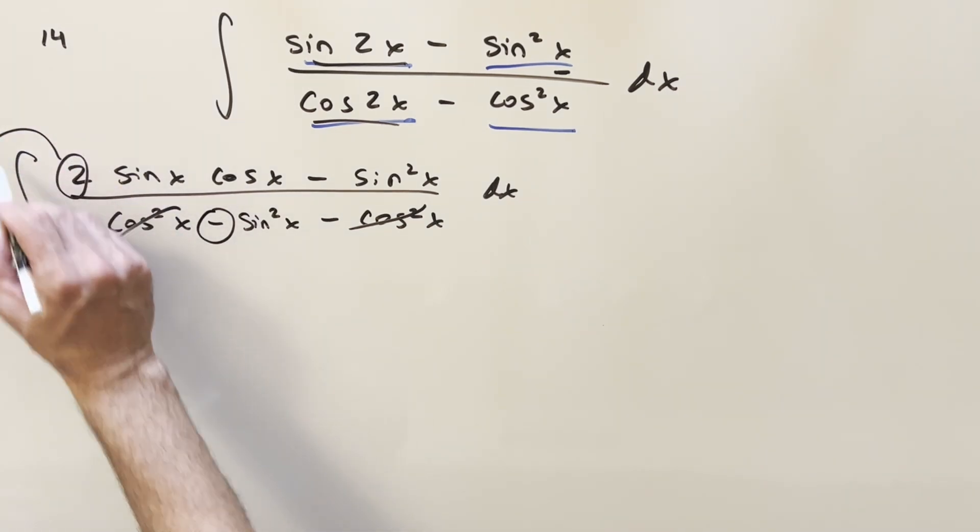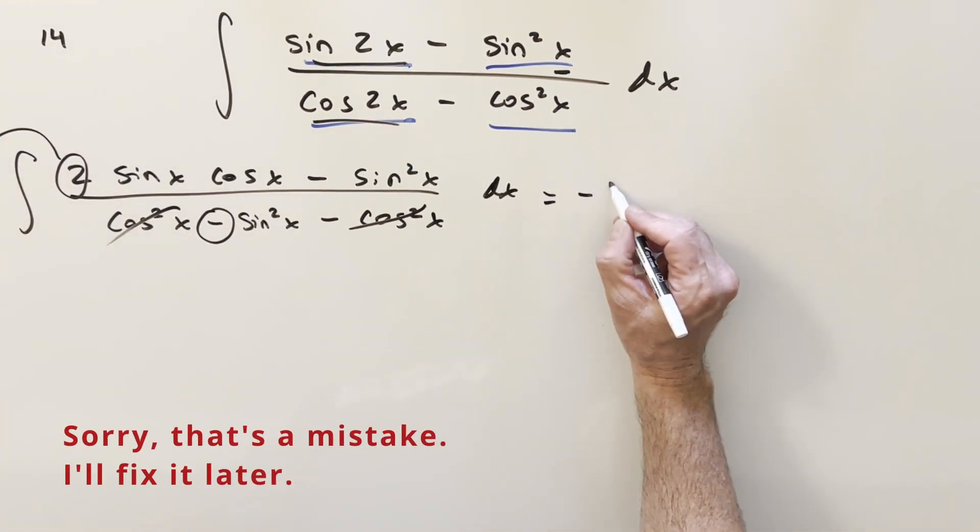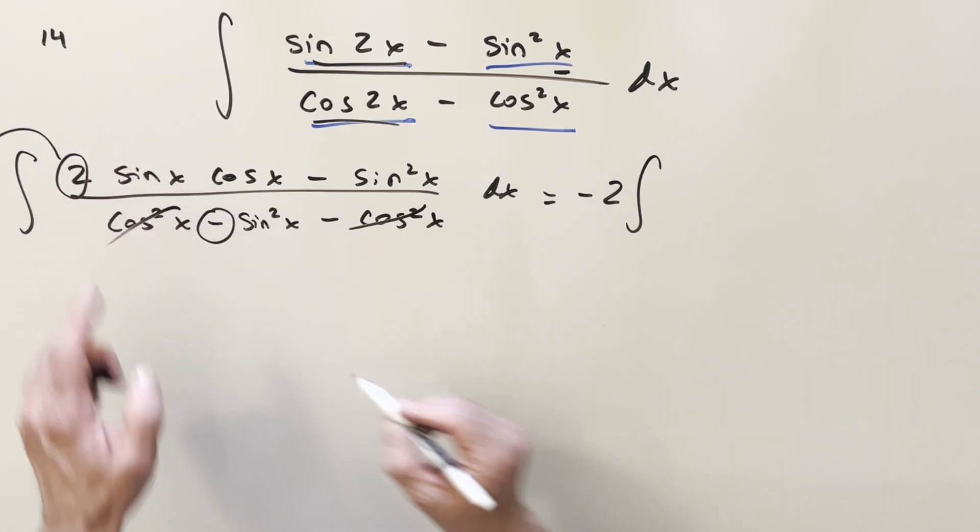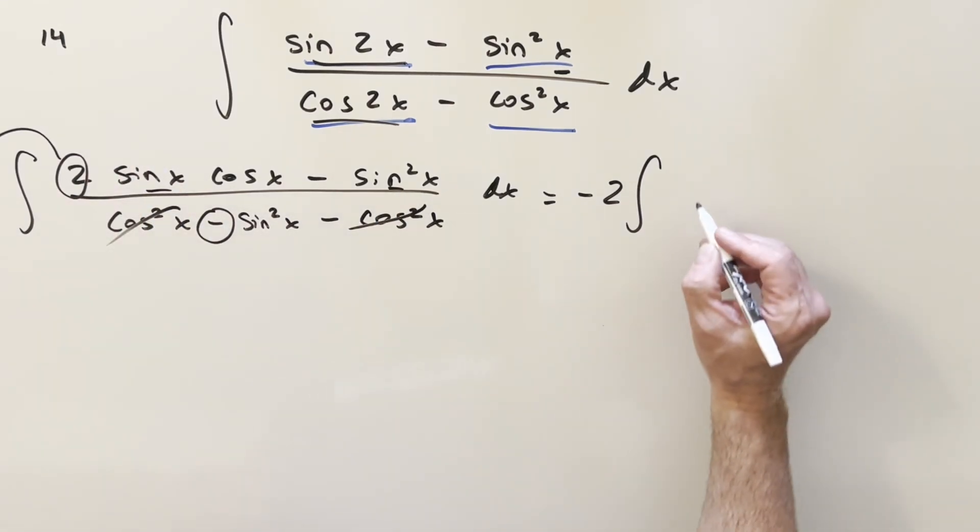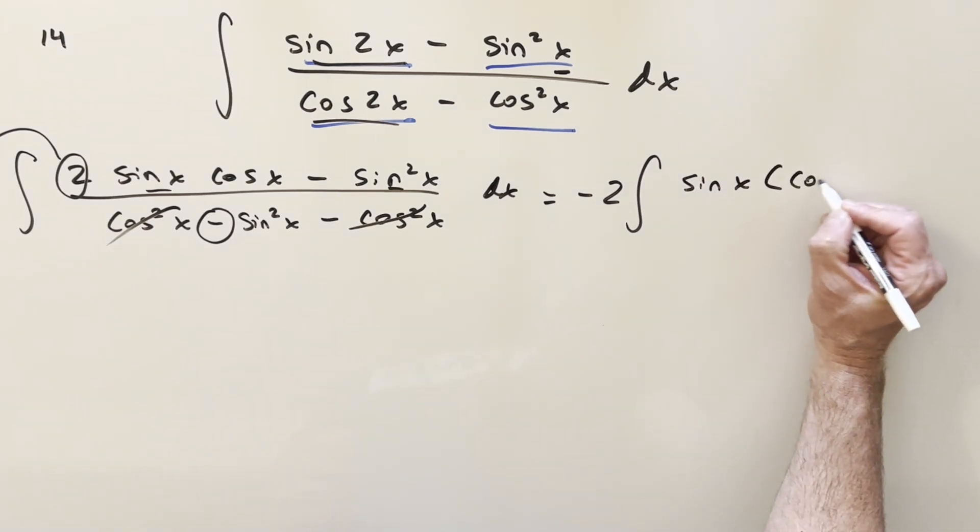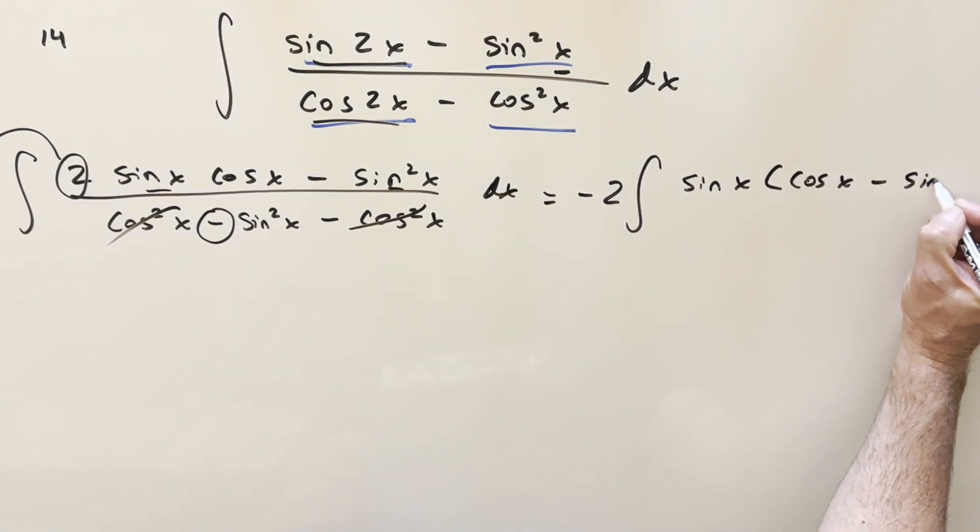I like that because then this one's going to cancel with this one. I can take this minus sine and this 2 out front of the integral. So when we do that, we're going to have minus 2 in front. For the numerator, we've got sine in common here and here. Let's factor out a sine. So we have, we'll write this as sine x cos x minus sine x.